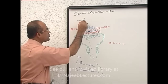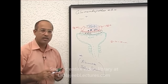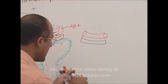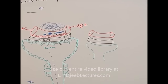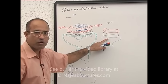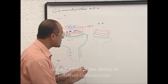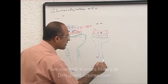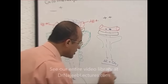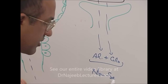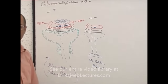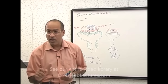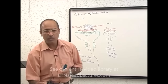Now let's consider another patient where injury to the glomerular structure is more — a plus-2 injury. The membrane becomes more leaky. This patient will have not only albumin coming down, but also globulin coming down. Albumin plus globulin — and this type of proteinuria is called non-selective proteinuria. With plus-1 injury only albumin leaks, but with slightly more injury both albumin and globulin leak.